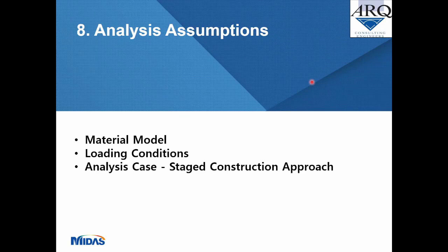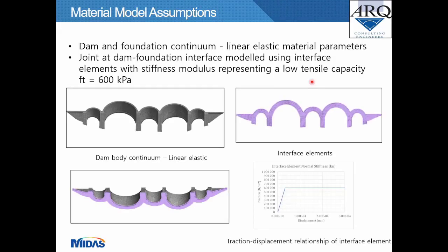Chapter 8 — analysis assumptions. The dam and foundation continuum were assumed to have linear elastic material parameters. The joint at the dam-foundation interface was modeled using interface elements with a stiffness modulus representing a low tensile capacity of 600 kPa — relative to the allowable tensile stress for extreme loading. Images show the various mesh bodies of the dam continuum, the interface elements at the dam base, and a traction-displacement relationship graph for the interface element.